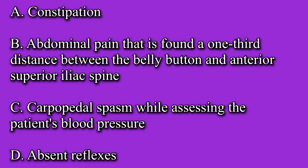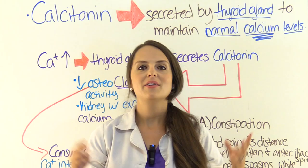A. Constipation. B. Abdominal pain that is found at one-third distance between the belly button and anterior superior iliac spine. C. Carpopedal spasm while assessing the patient's blood pressure. Or D. Absent reflexes.